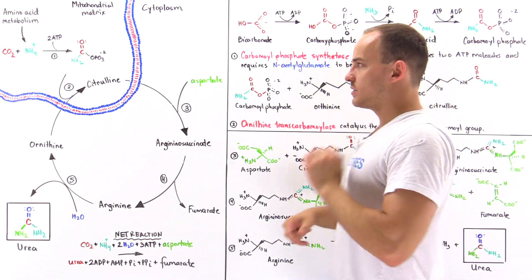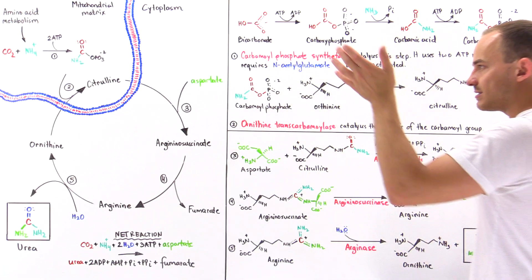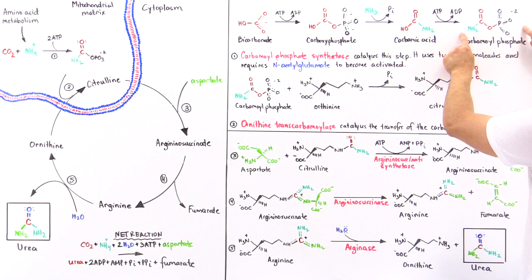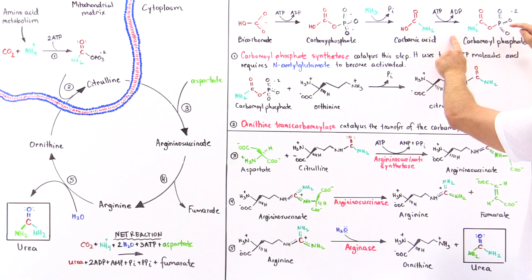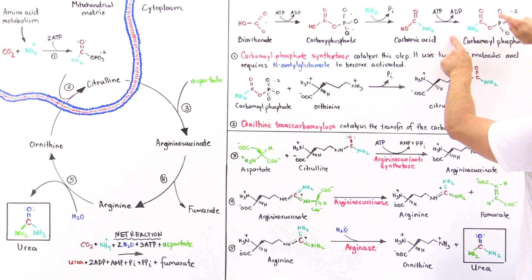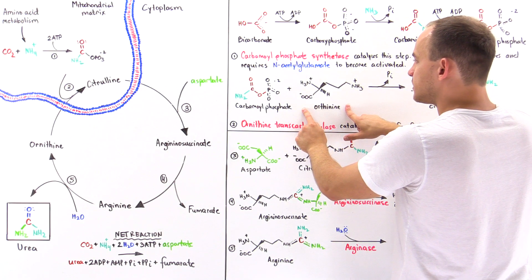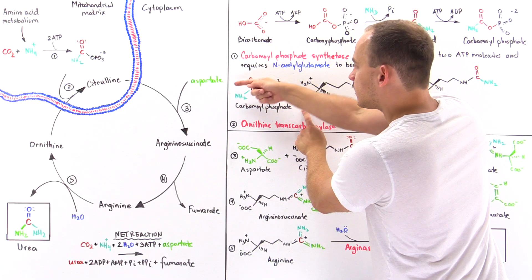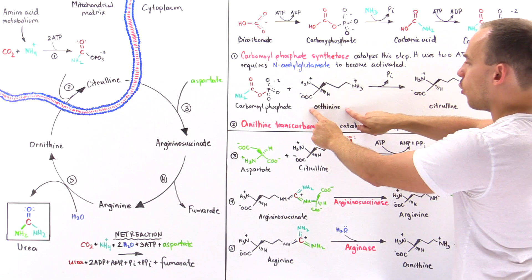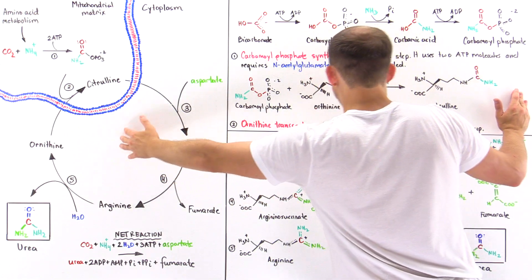Step two also takes place in the mitochondrial matrix because the enzyme ornithine transcarbamoylase resides there. This enzyme takes the carbamoyl group from carbamoyl phosphate, kicks off the orthophosphate, and transfers the carbamoyl group onto the nitrogen of ornithine to form citrulline. Citrulline then moves into the cytoplasm of the cell.